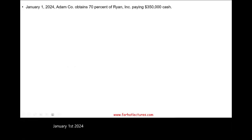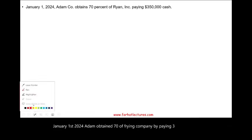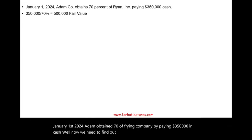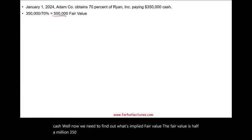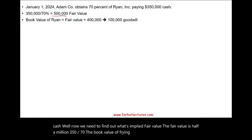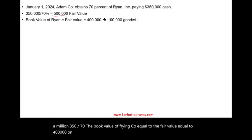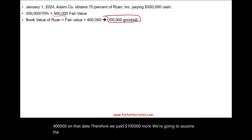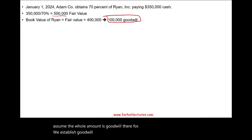On January 1st, 2024, Adam obtained 70% of Ryan Company by paying $350,000 in cash. Now we need to find out the implied fair value: $350,000 divided by 70% equals $500,000. The book value of Ryan Company equals the fair value, which is $400,000 on that date. Therefore, we paid $100,000 more — we're going to assume the whole amount is goodwill. Therefore, we established goodwill at $100,000.